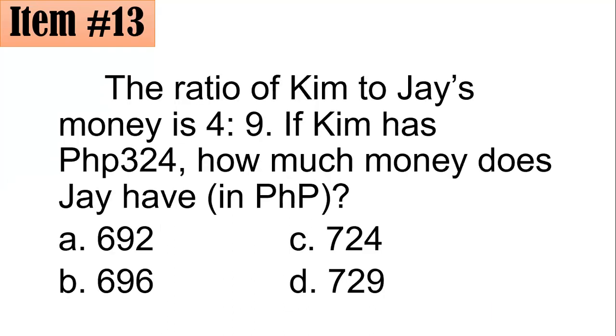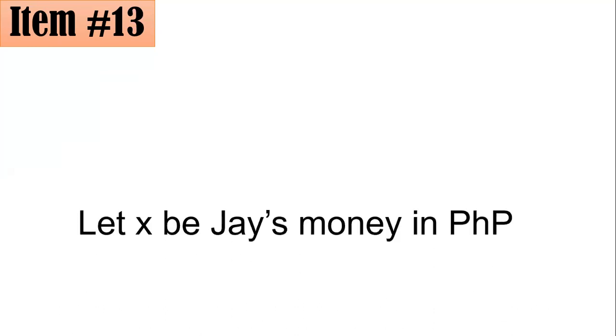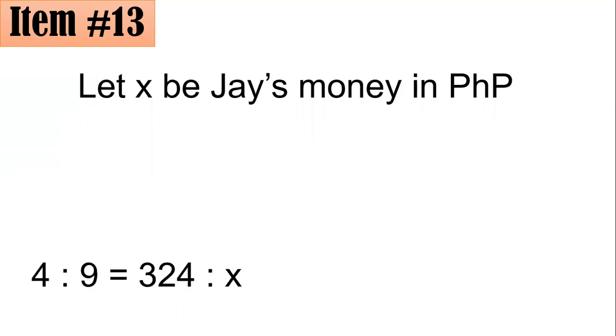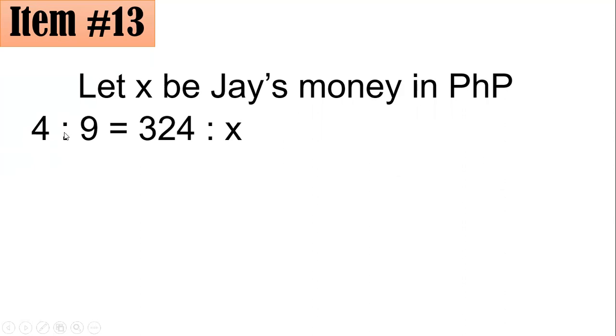Number 13. The ratio of Kim to Jay's money is 4 is to 9. If Kim has 324 pesos, how much money does Jay have in Philippine pesos? Is it 692, 696, 724, or 729? From here, we will use the concept of direct proportion. Let x be Jay's money in Philippine pesos. So this is the ratio of Kim to Jay's, that's 4 is to 9, and that is 324 is to x. Here, Kim to Jay; here is also Kim is to Jay.